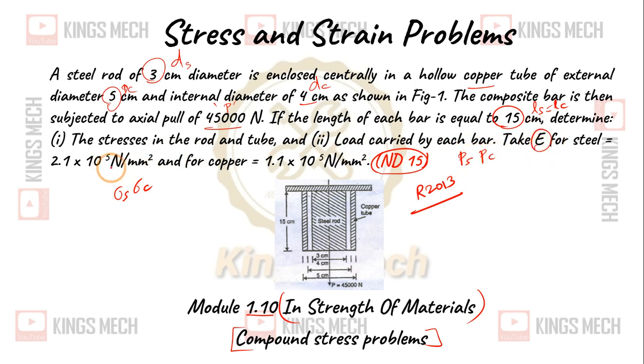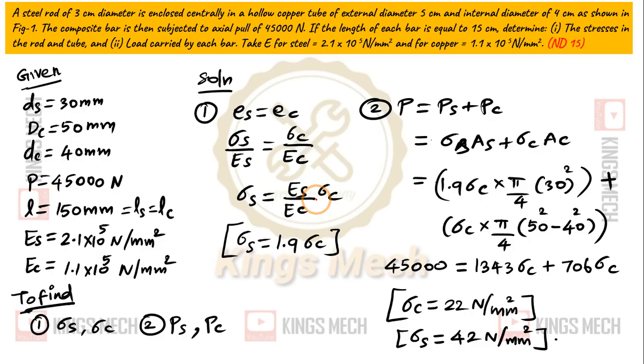Take E for steel and copper. So this is the given data: dc, ds, capital P, L, Es, Ec. The stress load, the two are equal to L.